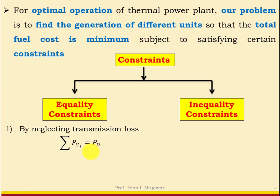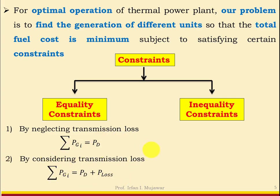Practically there will always be losses. By considering transmission losses, we rewrite the equation as: summation of PGi equals PD plus P_loss. That is, generation from all units should supply demand plus losses. These are the equality constraints.